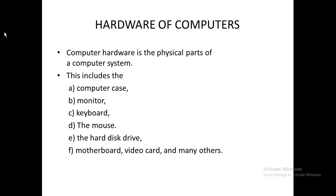We also have the hard drive disk. The hard drive disk is the device which stores our data as well as the software of the computer. These are the hardware components of the computer. We also have what we call the central processing unit.